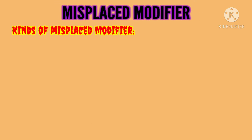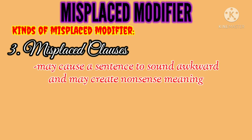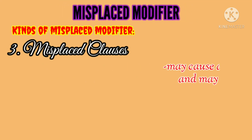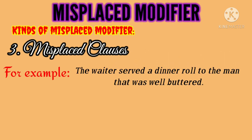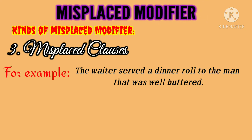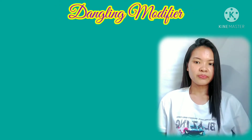The last kind of misplaced modifier is misplaced clauses. Misplaced clauses may cause a sentence to sound awkward and create a meaning that does not make sense. To fix the error, put the clause next to the noun it is supposed to modify. For example: 'The waiter served a dinner roll to the man that was well-buttered.' This creates a wrong thought — there is no buttered man. The revised sentence is: 'The waiter served a dinner roll that was well-buttered to the man.'